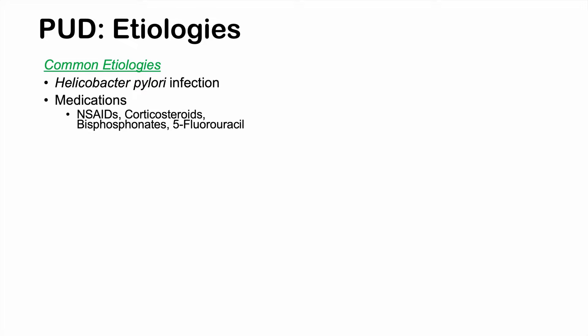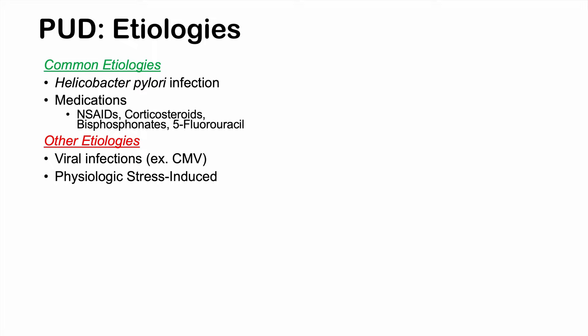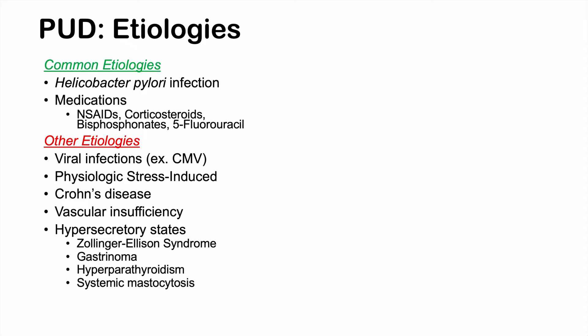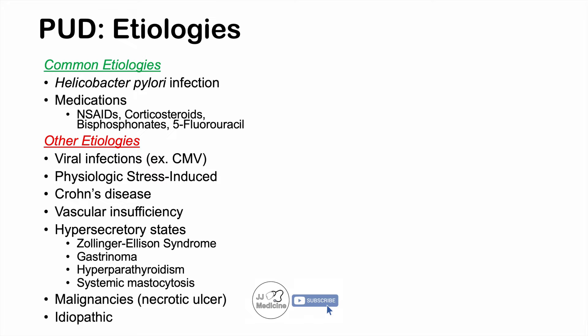Some other etiologies include viral infections, such as cytomegalovirus. Physiological stress, especially if chronic, can also lead to peptic ulcer disease, as can Crohn's disease due to chronic inflammation of the gastrointestinal system. Vascular insufficiency, hypersecretory states like Zollinger-Ellison syndrome, gastrinoma, hyperparathyroidism, and systemic mastocytosis are also causes. Malignancies, which normally cause a necrotic ulcer, and idiopathic causes are additional etiologies.